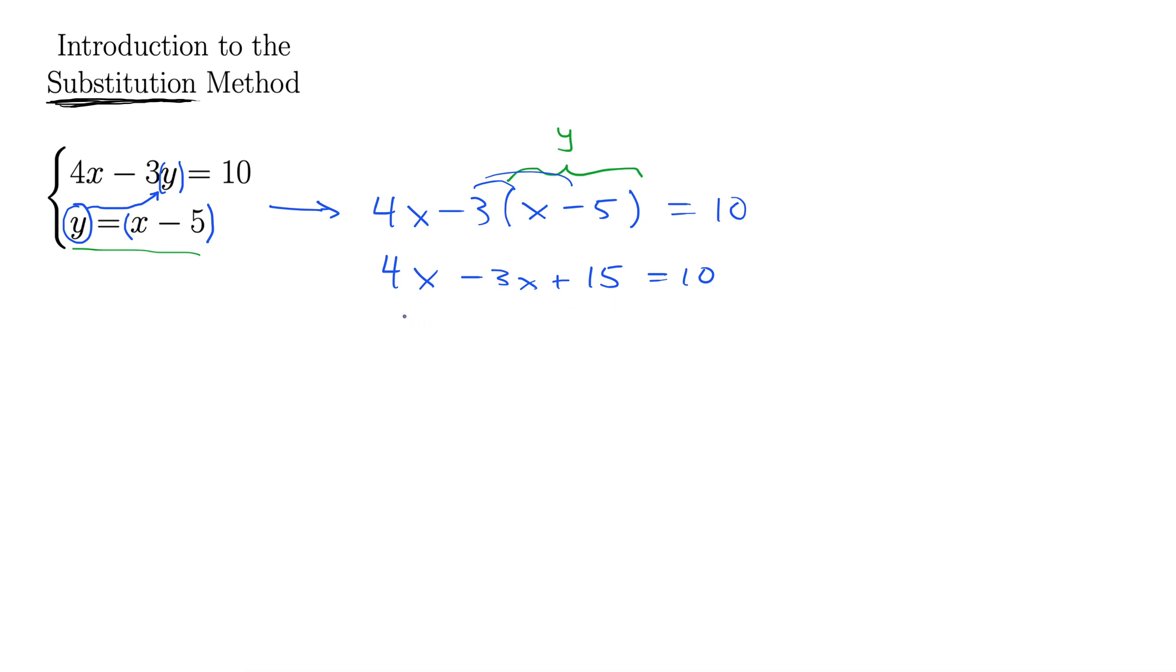Combine like terms. We get 4x minus 3x is simply x. Now I'll subtract 15 from both sides to get x equals negative 5.